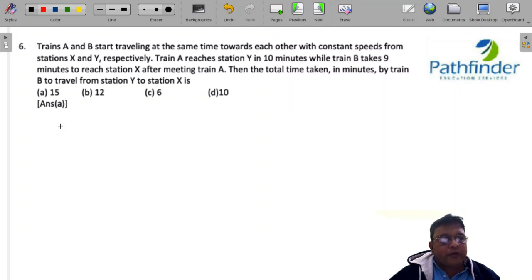Cat 22, slot 1, quantitative aptitude, question number 6. Train A and B start travelling at the same time towards each other with constant speeds from stations X and Y respectively. Train A reaches station Y in 10 minutes.